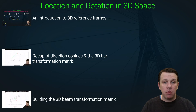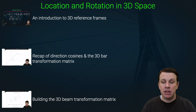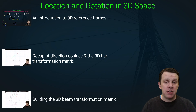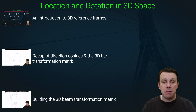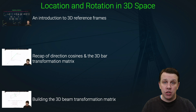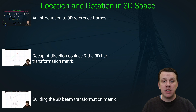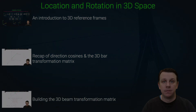Finally, we're going to bring together what we've covered in the previous two lectures and determine the transformation matrix for each element that maps between that local element reference frame and a global reference frame. This is a relatively short section, but like section 2 it's really crowned with critical important information, so take your time with this one.